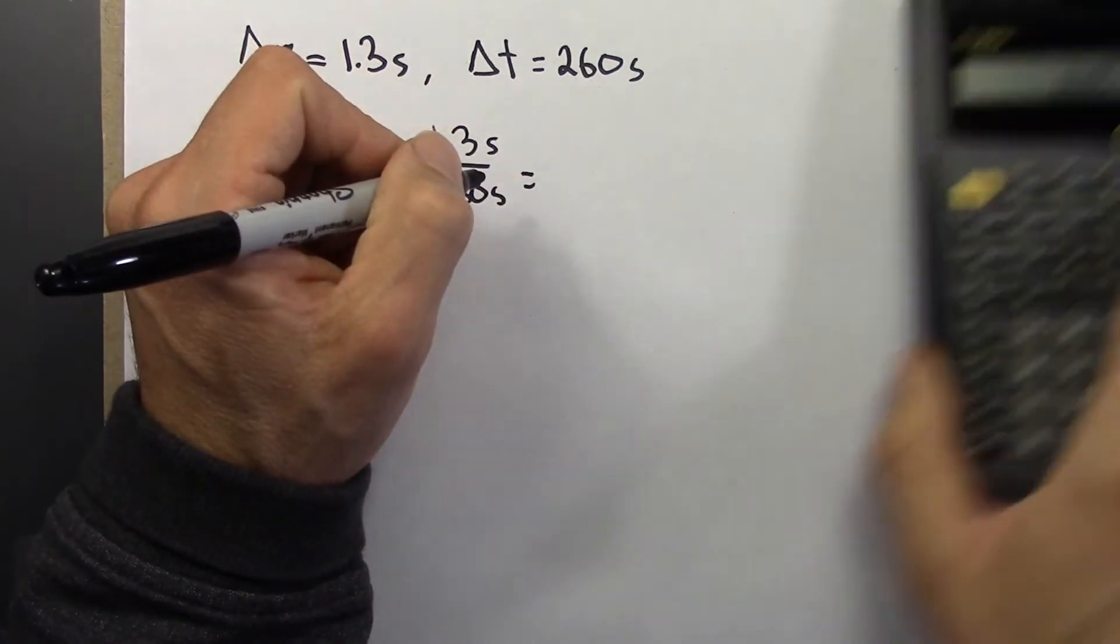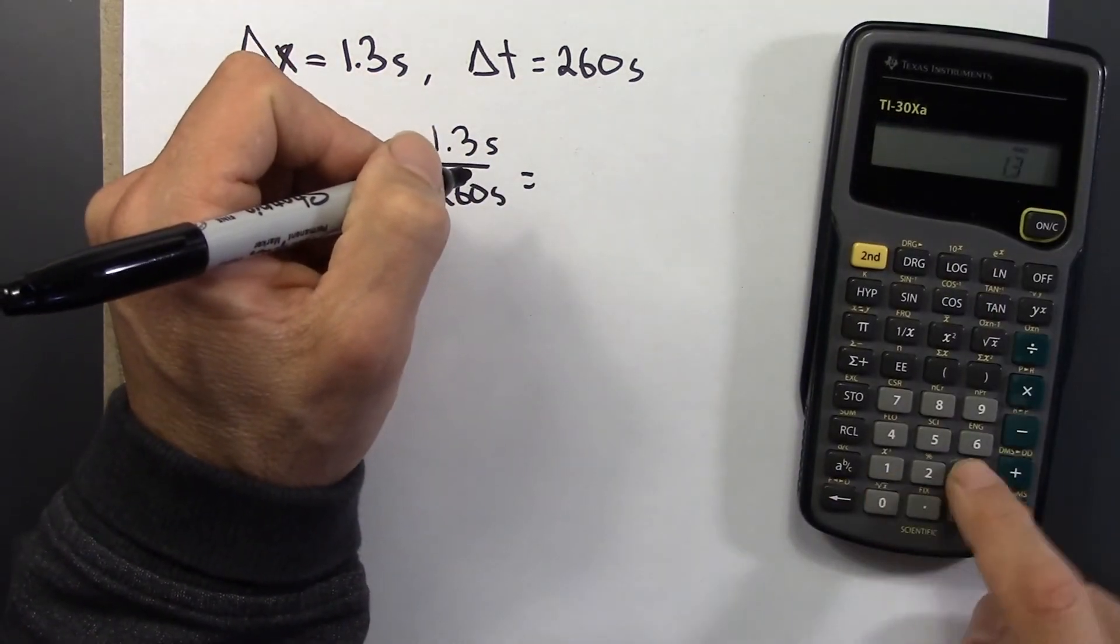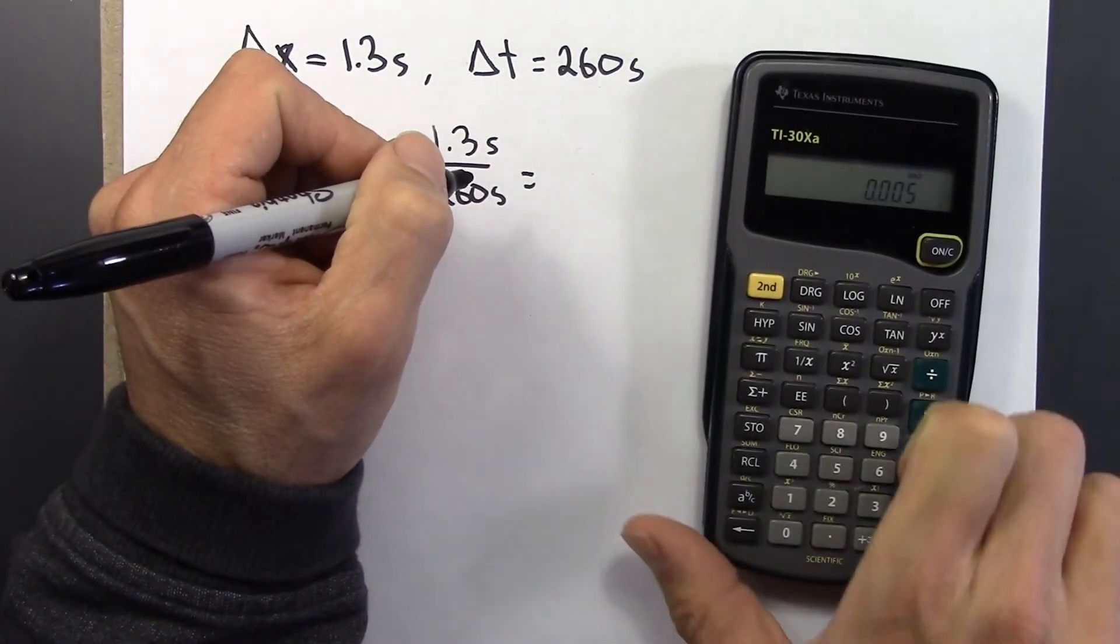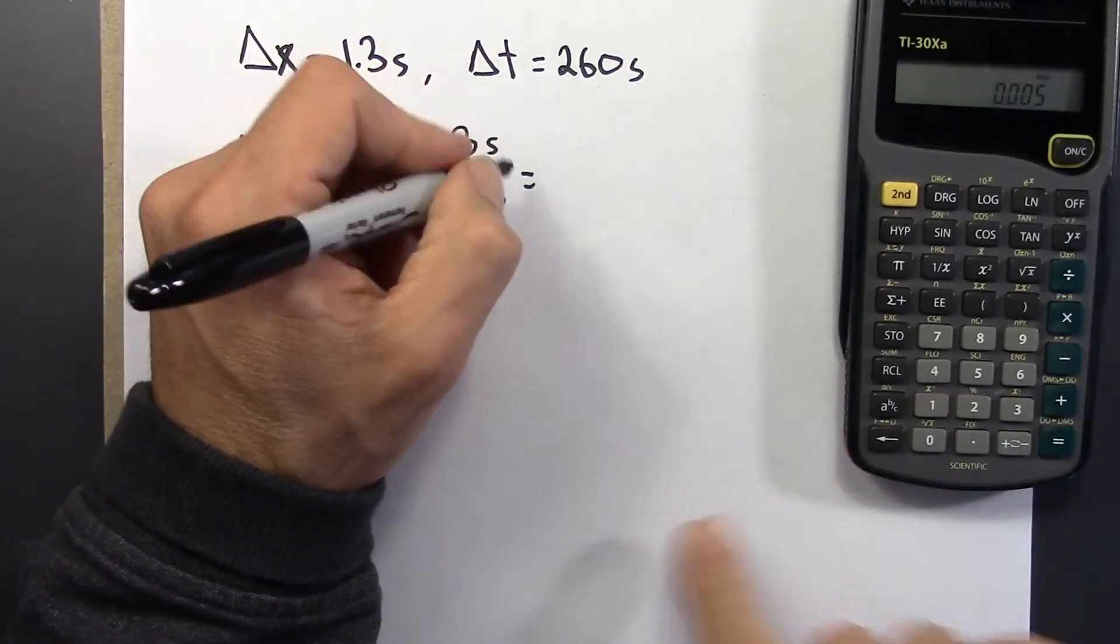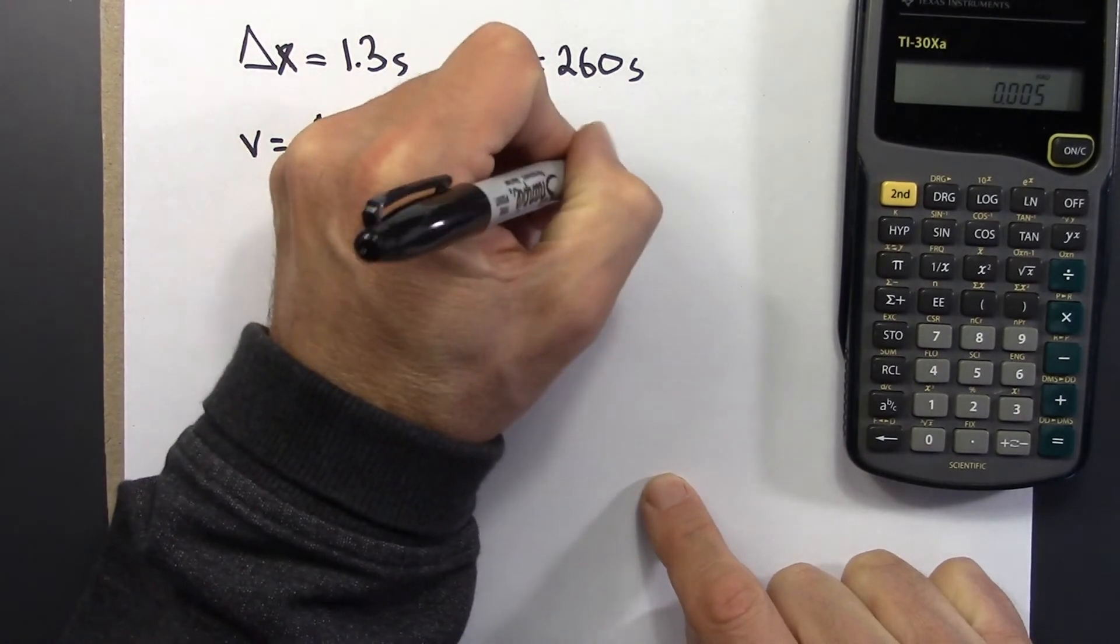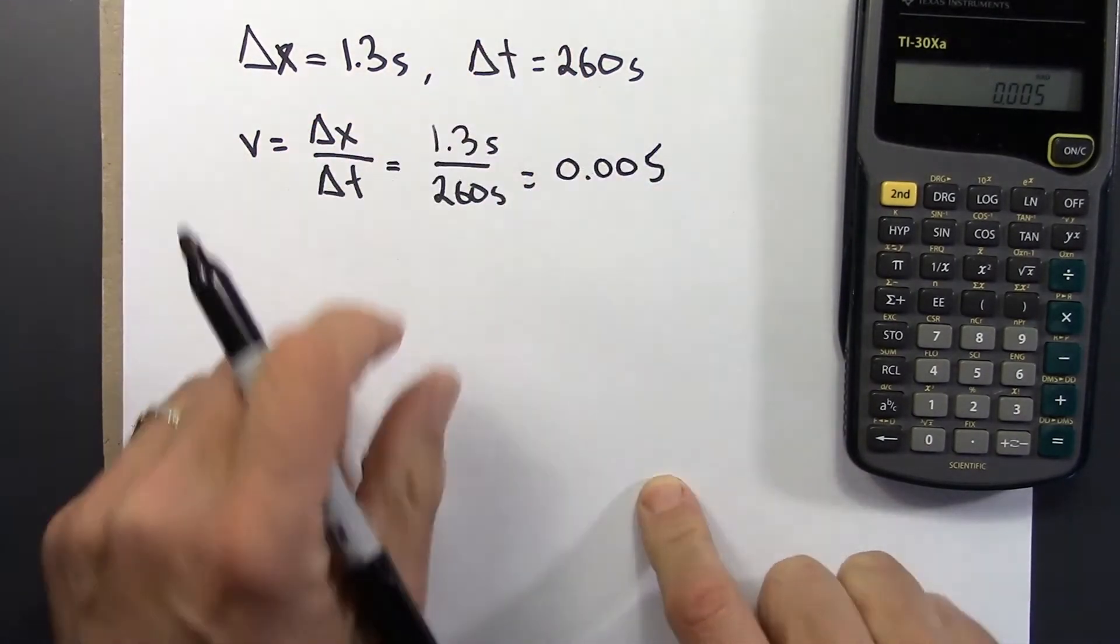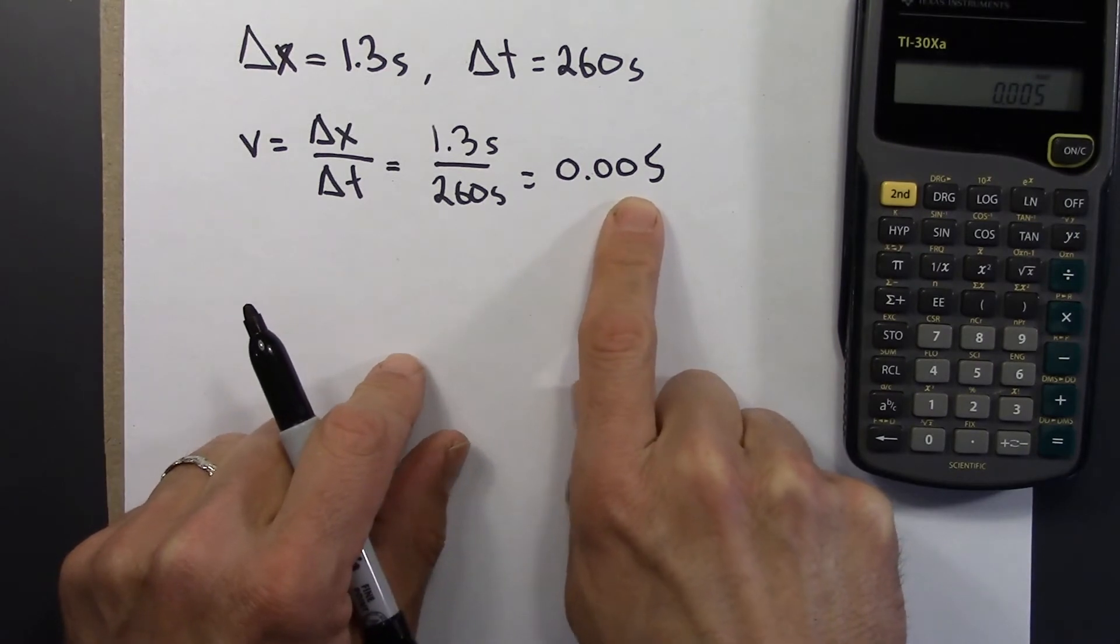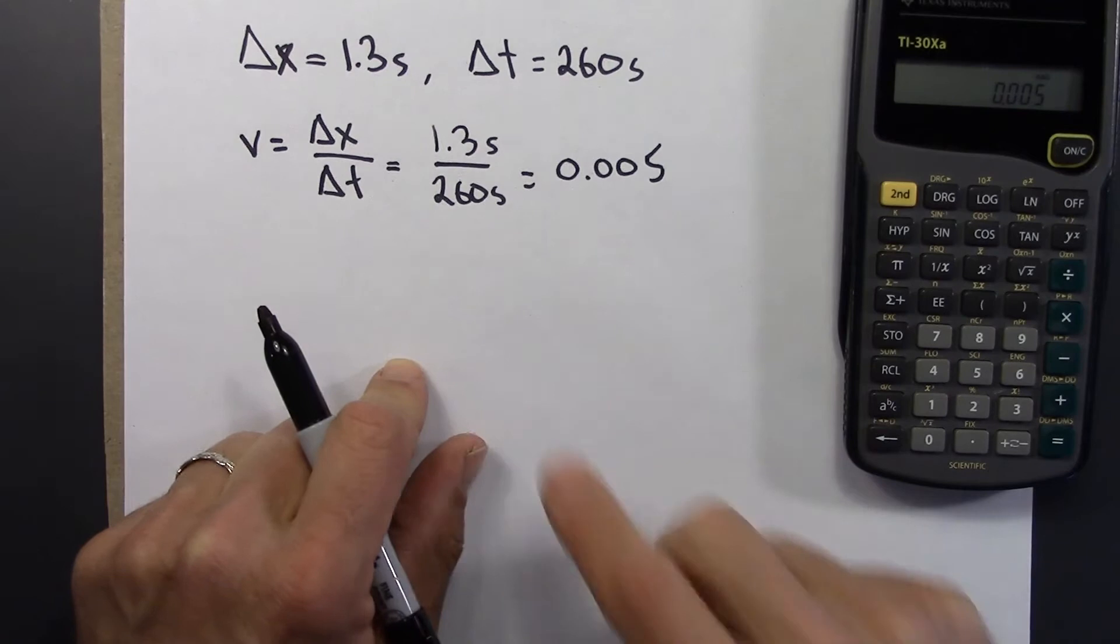1.3 seconds over 260 seconds. And let's see, 1.3 divided by 260, I get 0.005. So the train is going at this fraction of the speed of light, so 0.5% of the speed of light. This is a really fast train.